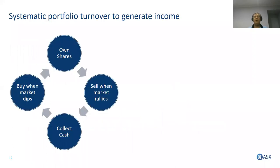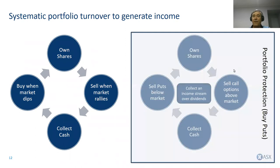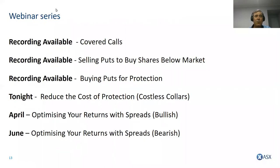Systematic portfolio turnover: own shares, sell them when the market rallies, collect cash, buy when the market dips. We own shares, sell call options above where the market's trading, collect cash, sell puts below where the market's trading, and implement portfolio protection over the top. Sounds great, but it can be expensive — we saw that in the portfolio protection session. So what we're going to focus on is a way to actually reduce the cost of that protection. We call it the collar or costless collar — we collar our stock.